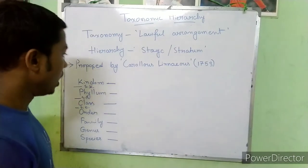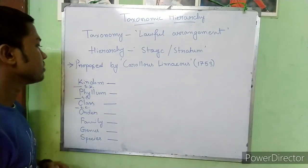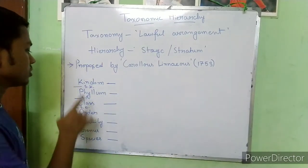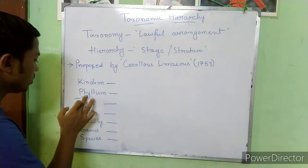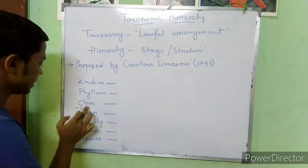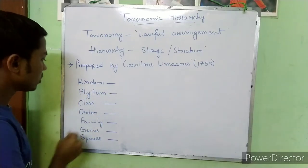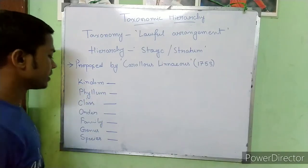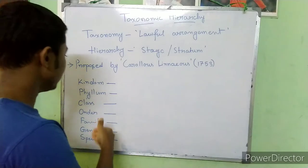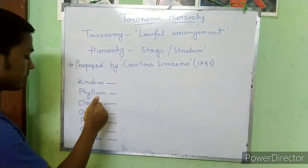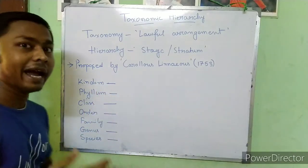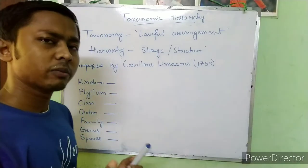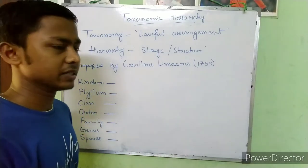So mainly we are talking about Kingdom, Phylum, Class, Order, Family, Genus, and Species — this is the full arrangement we are learning. Kingdom, Phylum, Class, Order, Family, Genus, and Species represent the standard taxonomic hierarchy.